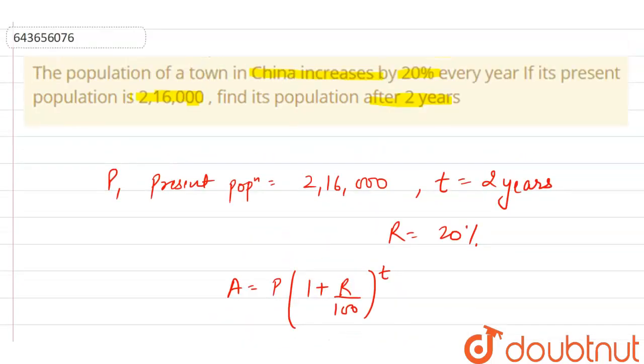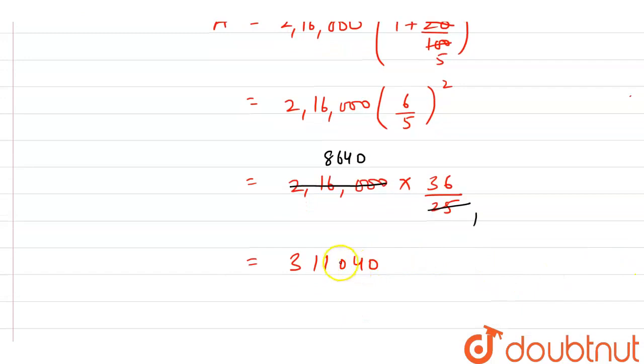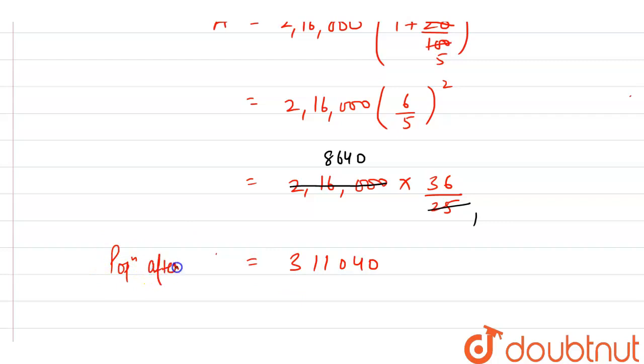The question asked for population after 2 years, so the population of the town after 2 years is 3,11,040. This is our final answer. Thank you.